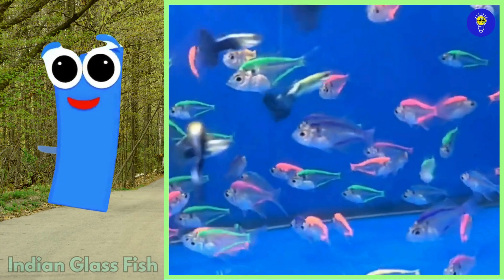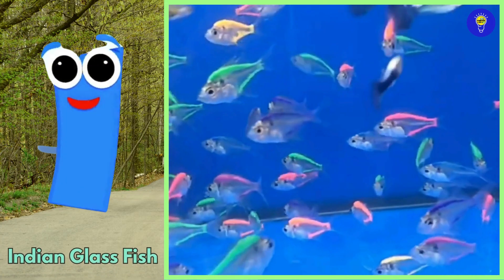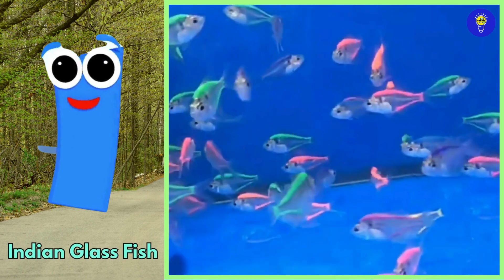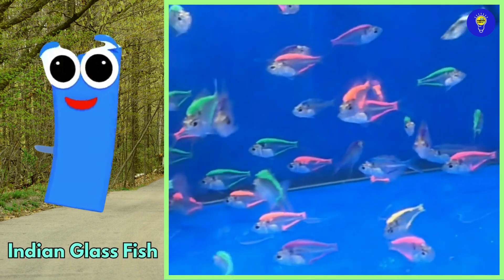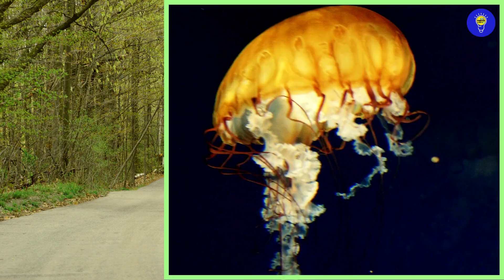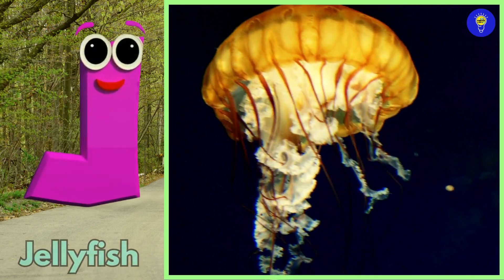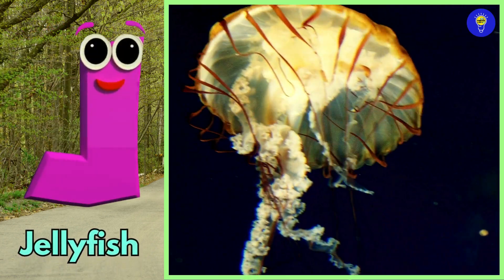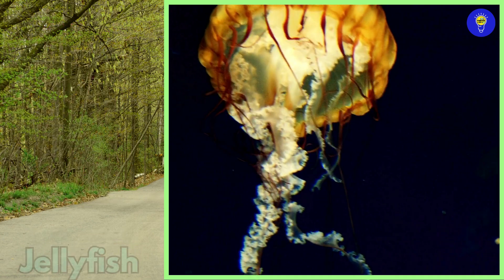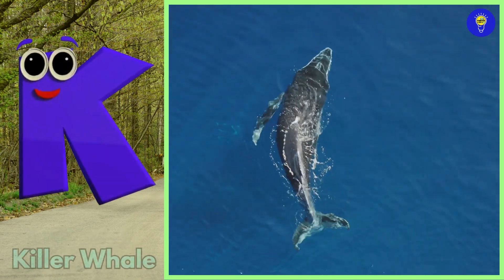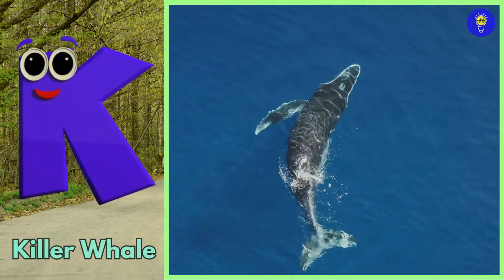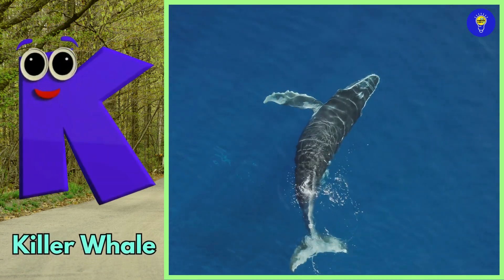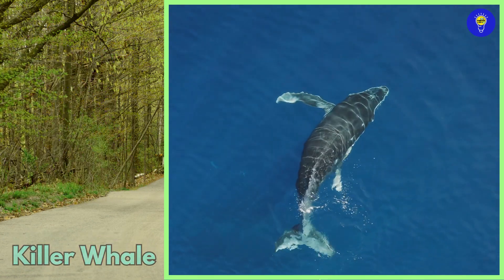I is for Indian glass fish. J is for jellyfish. K is for killer whale.